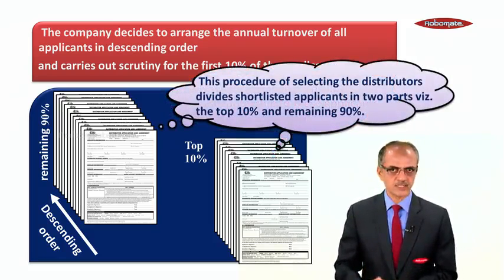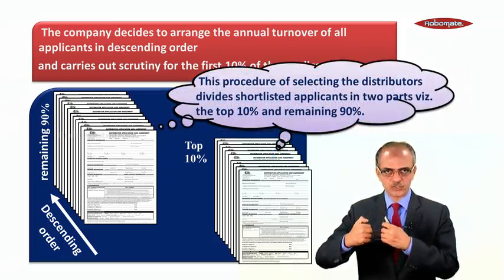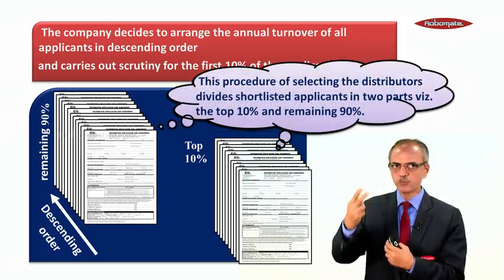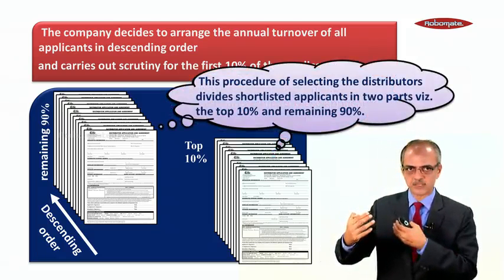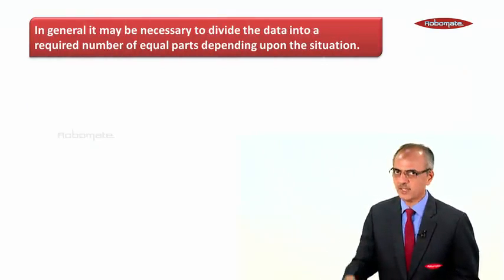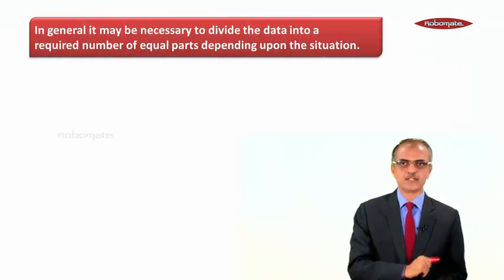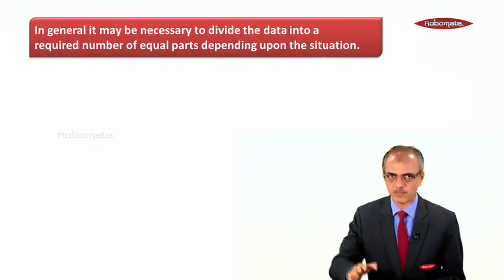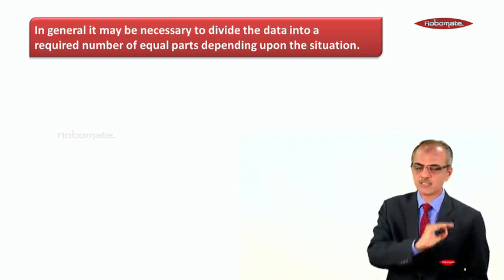This procedure of selecting the distributors divides the shortlisted applicants into two parts: the top 10% and the remaining 90%. My dear student, in general it may be necessary to divide the data into a required number of equal parts depending upon the situation.